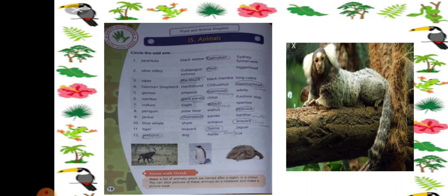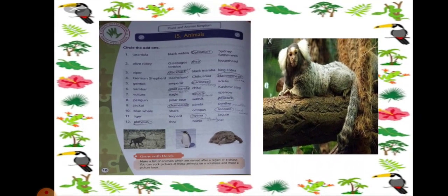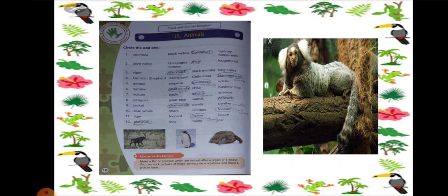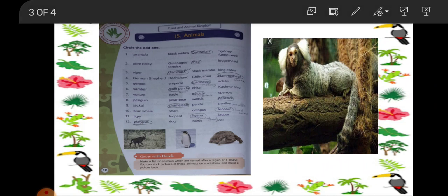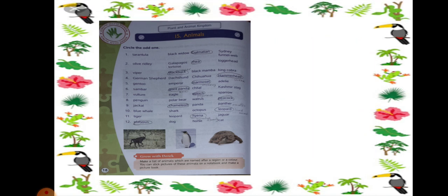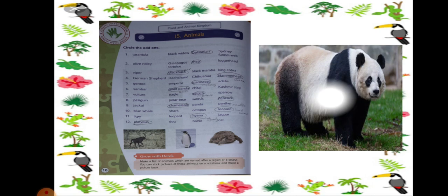Number 6: Sambur, Giant Panda, Chital and Kashmiri Stag. So here, Giant Panda is different because this is a bear and rest are all different groups. The Giant Panda will be separated from the other groups.